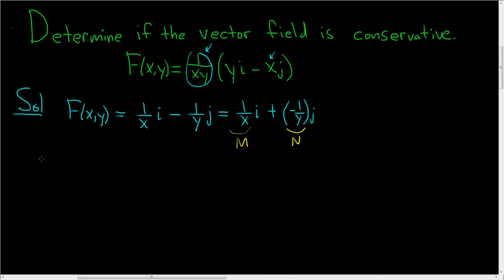And we start by checking del M del y, so the partial derivative of M with respect to y. In this case, that's simply 0. There's no y's here. 1 over x, we treat it as a constant.